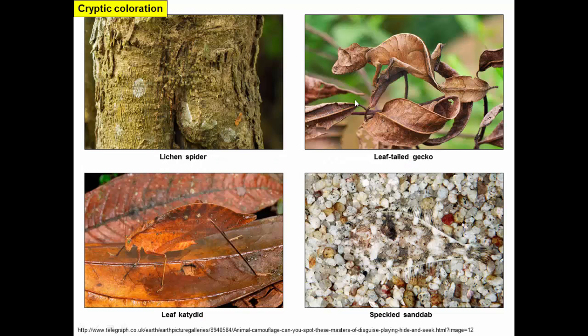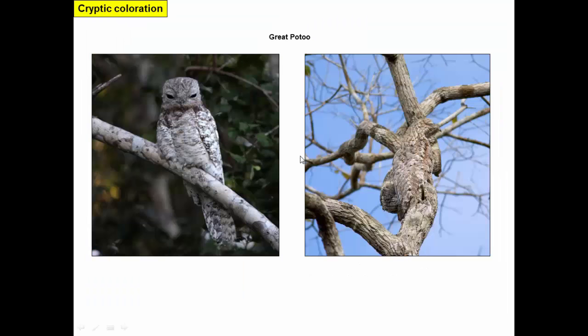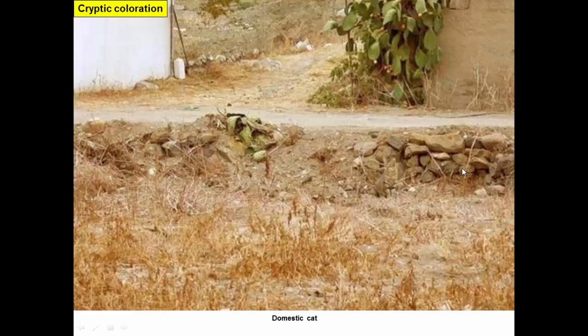The second type of coloration mentioned for our coral snake example is cryptic coloration. There are a number of organisms that have interesting color patterns or features that make them blend into the background. There's a gecko that looks a lot like leaves, a katydid that looks like the leaves it lives on, a spider on a tree, a speckled sanddab fish that blends in very well to its surroundings, a bird that from certain angles is nearly invisible against tree branches, and even domestic cats can sometimes blend into their surroundings quite well.